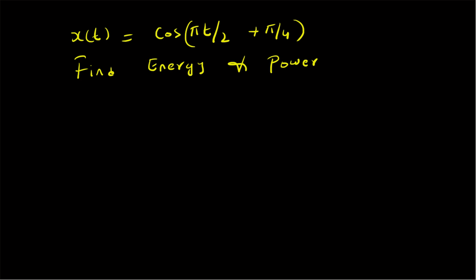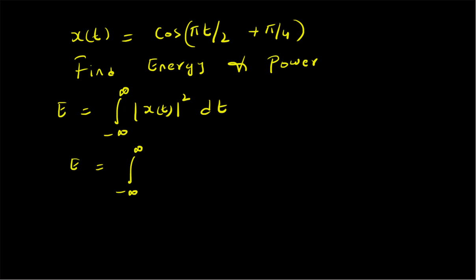First, let us look at energy. Energy is denoted as E and is defined as the integral from minus infinity to plus infinity of |x(t)|² dt. Using the definition of the given signal, we can calculate the energy as the integral from minus infinity to plus infinity of cos²(πt/2 + π/4) dt.